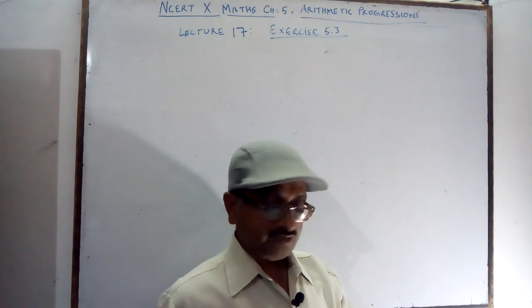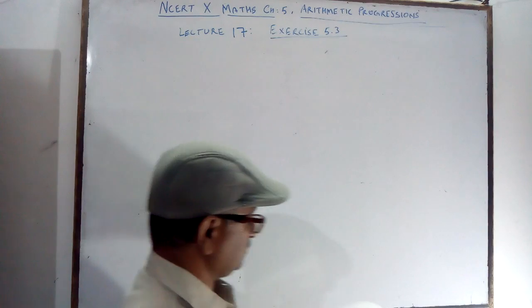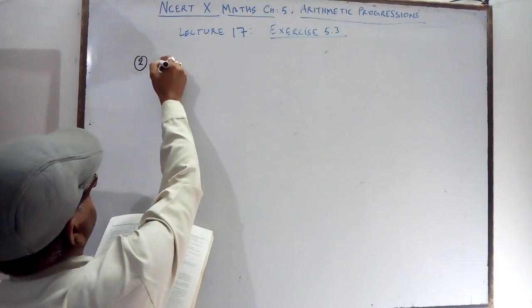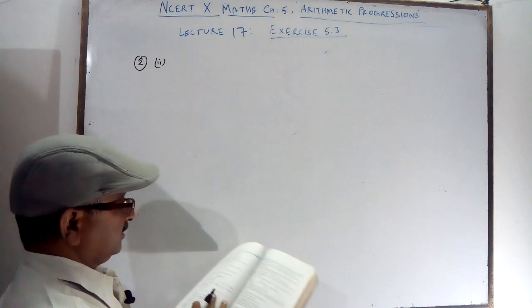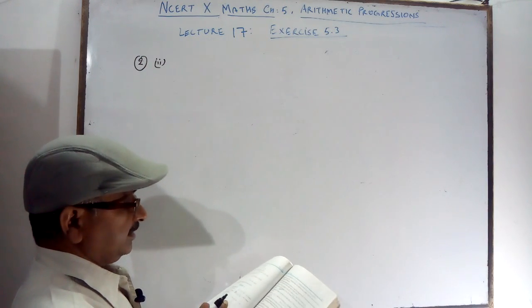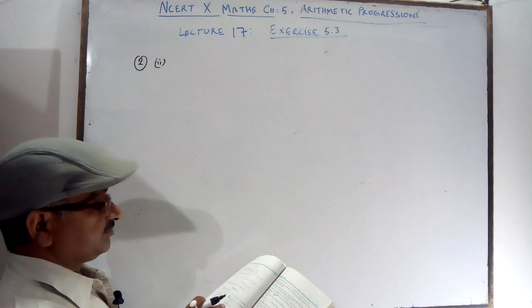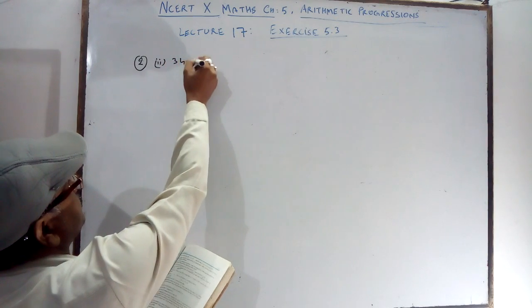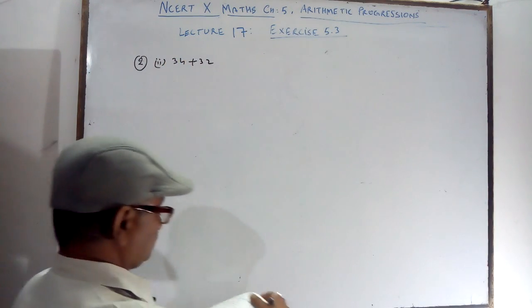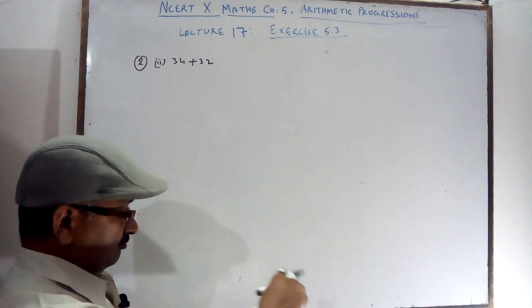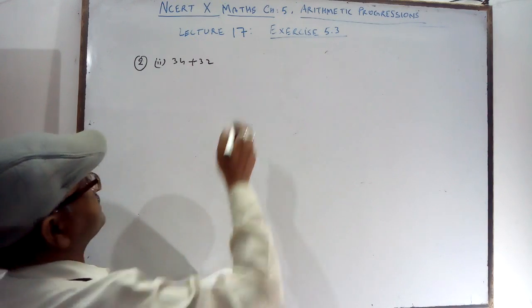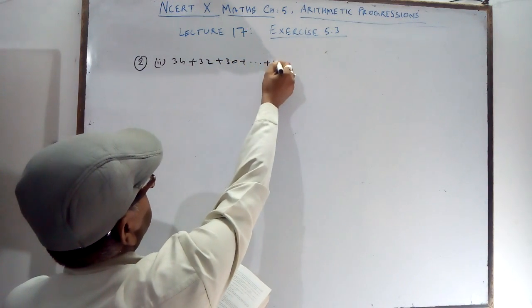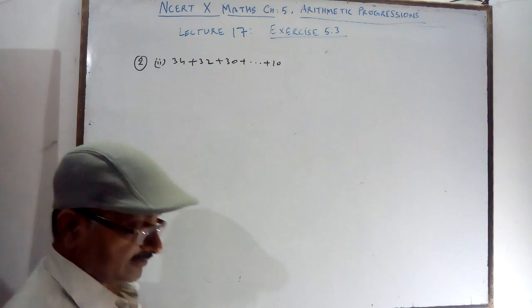In Exercise 5.3, we are now on the second part. Find the sum of 34 plus 32 plus 30 plus dot dot dot plus 10. It is given.